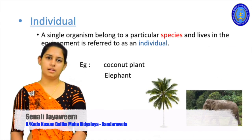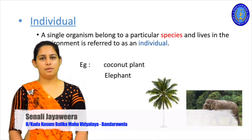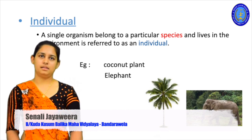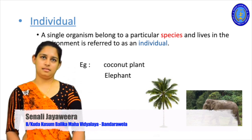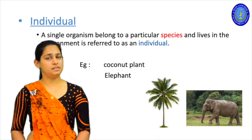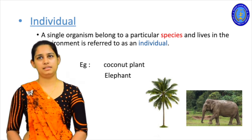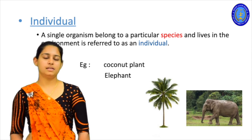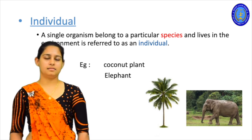First, the individual. What is an individual? An individual is a single organism. In the environment there are different single organisms — a single organism that belongs to a particular species and lives in the environment is referred to as an individual. You have to highlight the words 'particular species' and 'live in the environment.' This is only one organism we are considering. It may be a coconut plant, an elephant, a mango plant, a tiger, a rabbit — any kind of single organism belonging to a particular species.